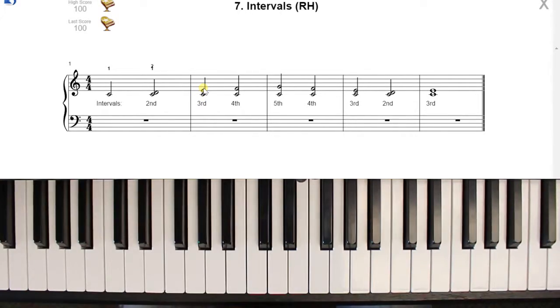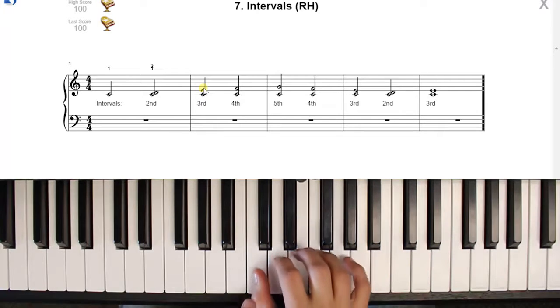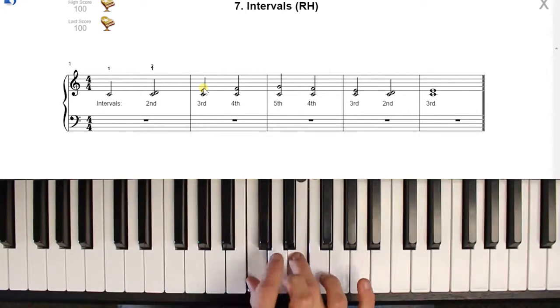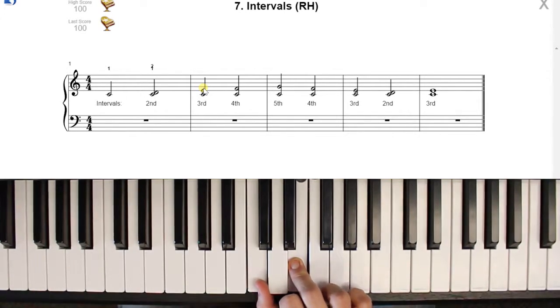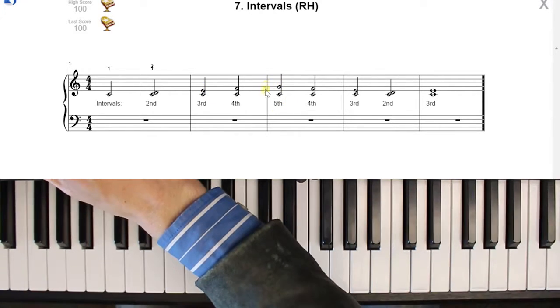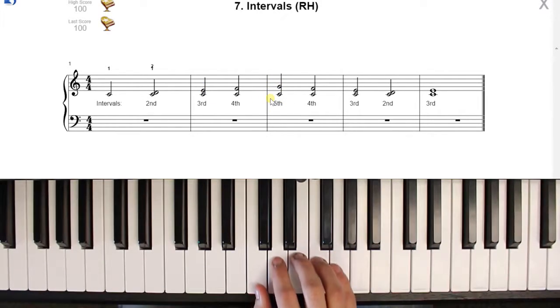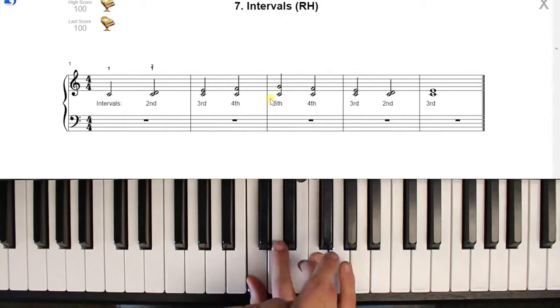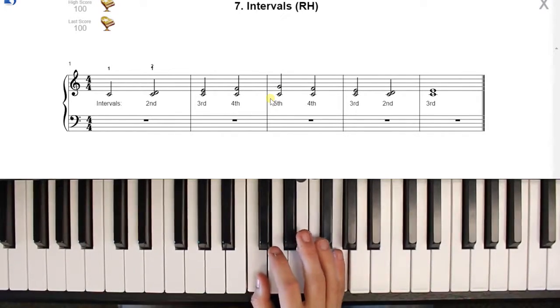So we have C and E. The reason this is called our third interval is because we have one, two, three notes of spacing. Let's go ahead and take a look at our fifth interval. The reason this one is fifth is because we have five notes of spacing. So it's C and G. One, two, three, four, five. Five note spacing.